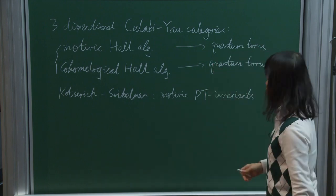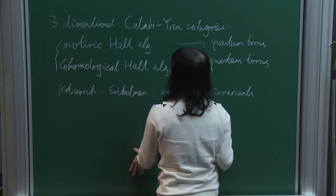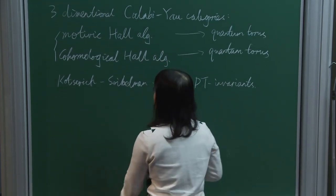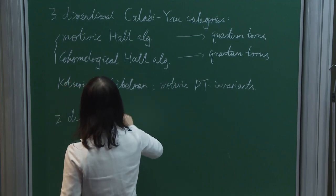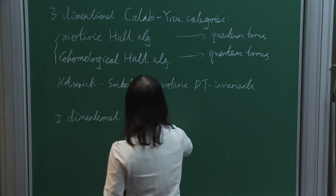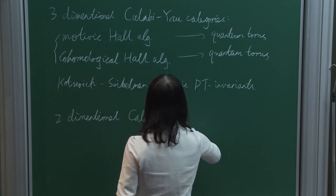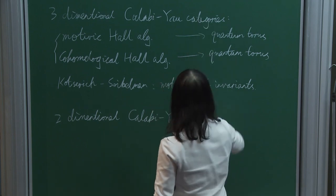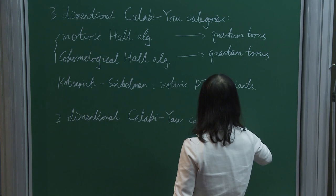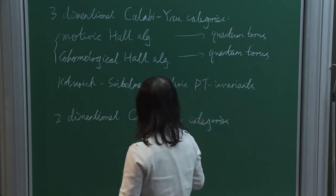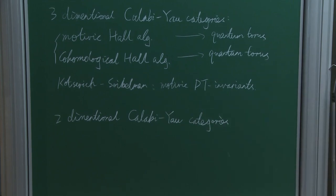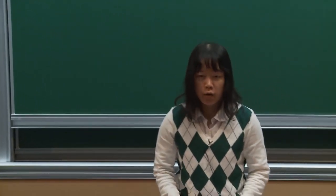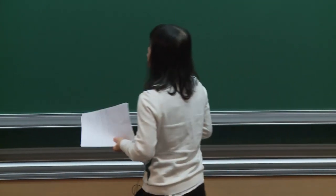This is the three Calabi-Yau case, and today I'm going to talk about an analogous story for two Calabi-Yau categories. This is joint work with Soibelman. First of all, I'm going to introduce the notion of internal constructible n-infinity d-dimensional Calabi-Yau categories.